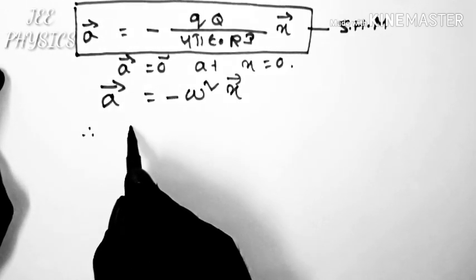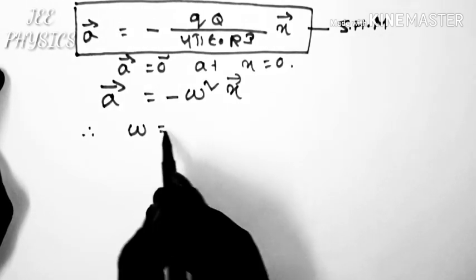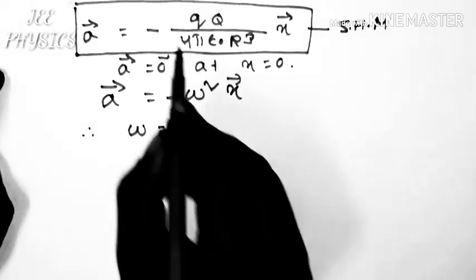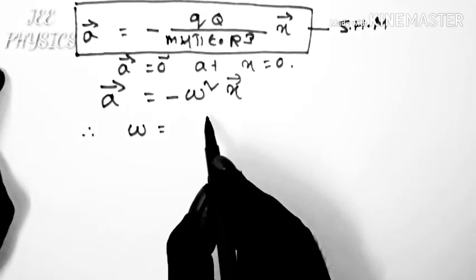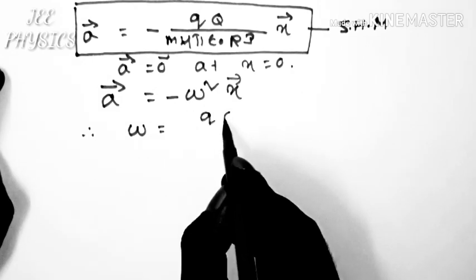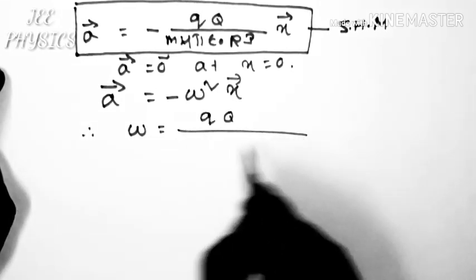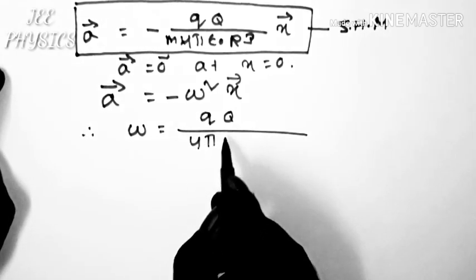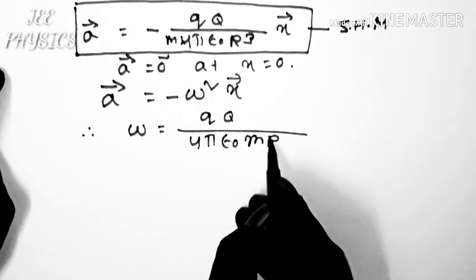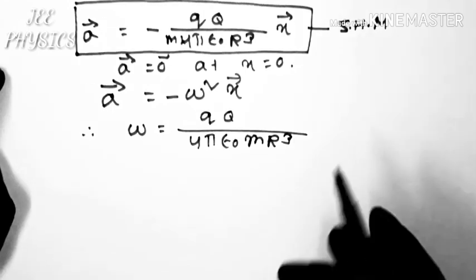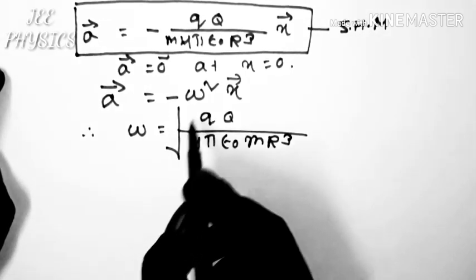So here omega equal to, sorry here mass is there. So omega equal to q into q by 4 pi epsilon naught m r cube root under the whole term.